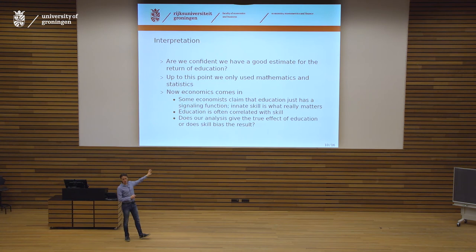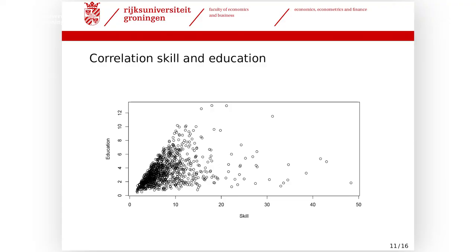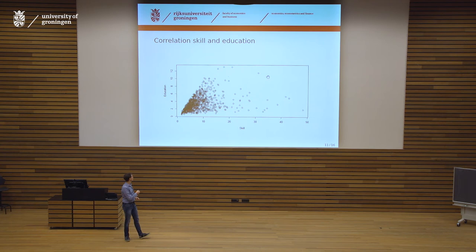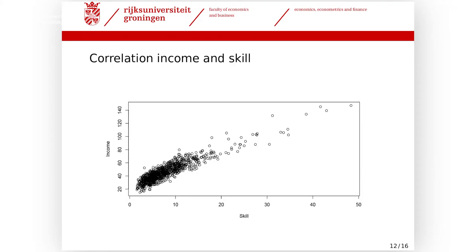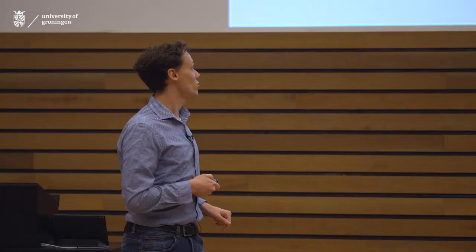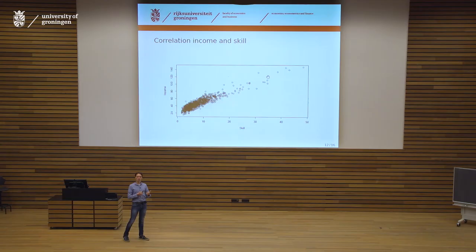In practice it is almost impossible to measure skill — that's why firms use education as a proxy. Fortunately, I have simulated data, so I created data on skill to show what the effect can be. On the horizontal axis skill, vertical axis education: low levels of skill always correspond to low levels of education, and there appears to be a positive slope. For income, there is a much clearer and very strong correlation with skill.